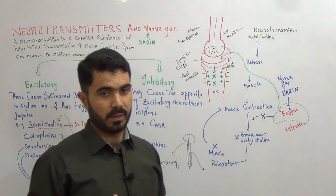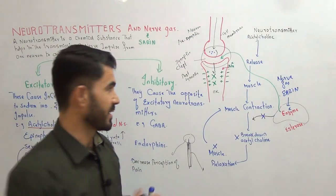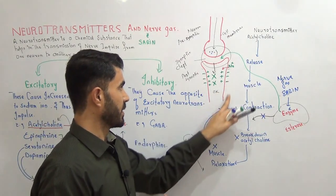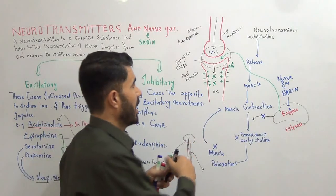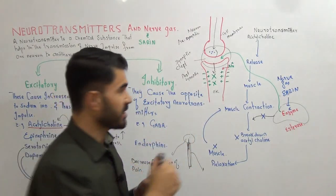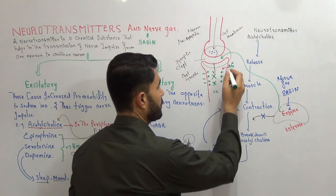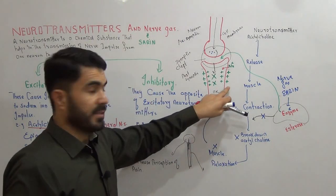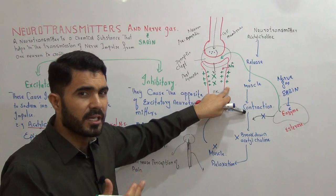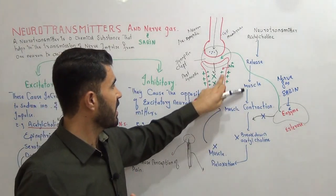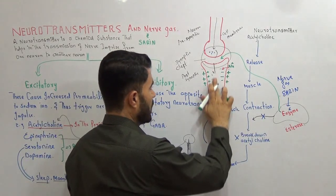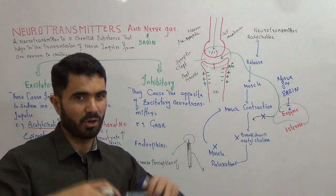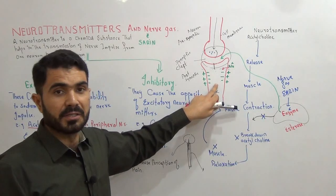In the normal state, you will find a lot of sodium ions along the membrane. Since sodium carries a positive charge, there are many positive charges on the outside. Normally the outside of the neuron is positive and the inside is negative. This is the resting state of the neuron.